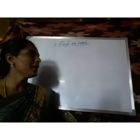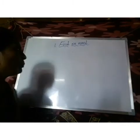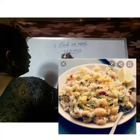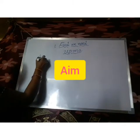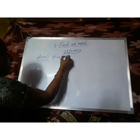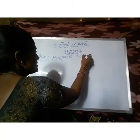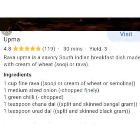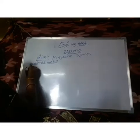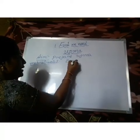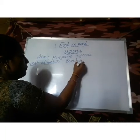Now let us prepare a tasty food item — upma. First of all, we have to write the aim: Prepare upma. Second, what are the materials required? Bombay suji, green chili, curry leaves, cashew, red chili, oil, salt, and jeera.